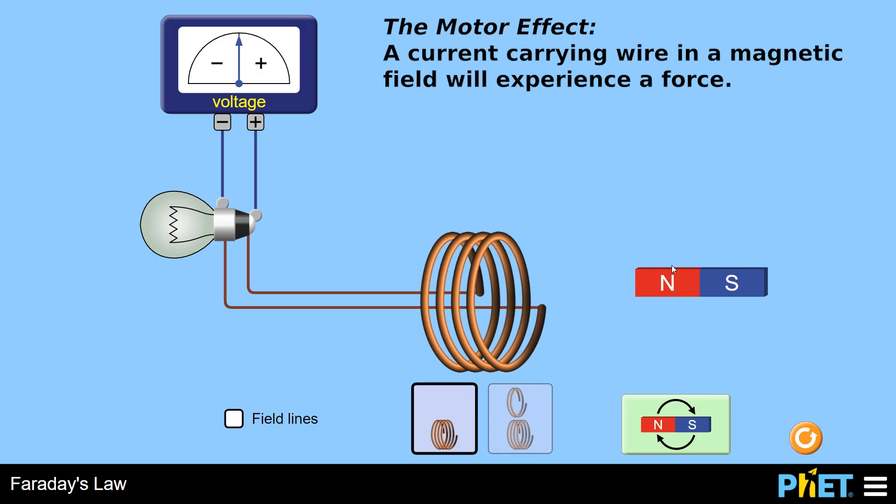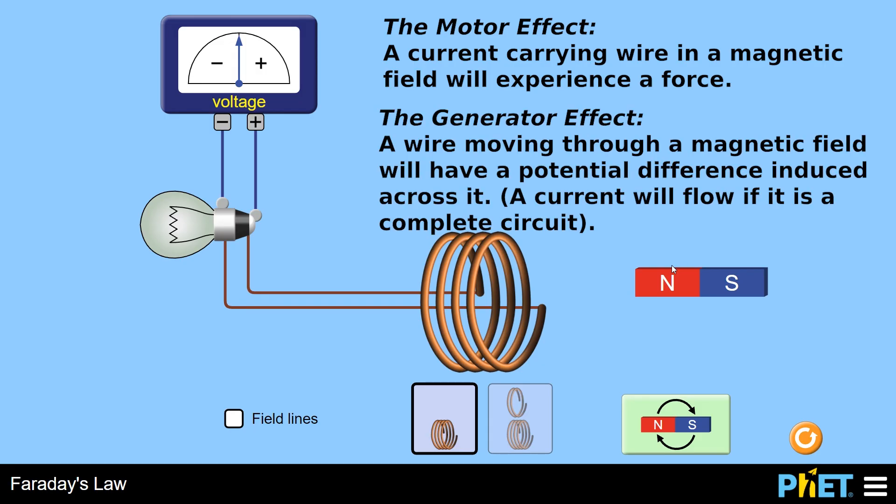we are going to move a wire through a magnetic field and we're going to generate a current. So it's kind of the exact opposite.